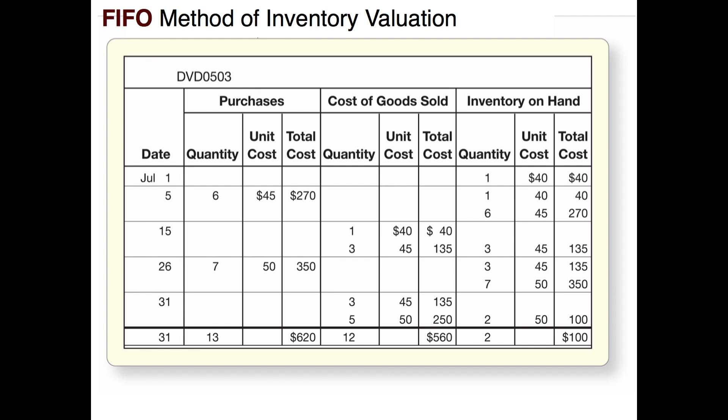On July the 15th we sold four items. Because we're using the first in first out method, we start with our beginning inventory. Beginning inventory only had one item — not enough to fulfill the order — but we theoretically sell that one item which cost $40, and then we grab three from the July the 5th purchase at $45 each. We don't know what we sold them for because this spreadsheet is only a cost sheet — revenues are not depicted here at all.